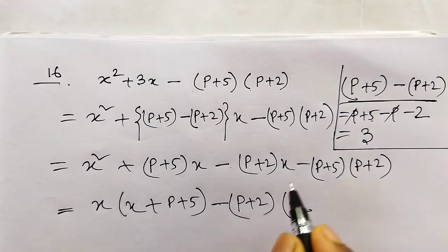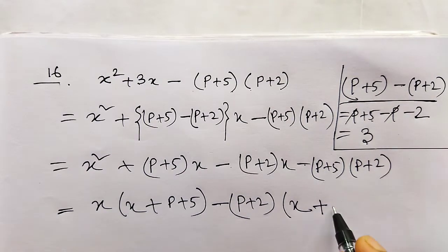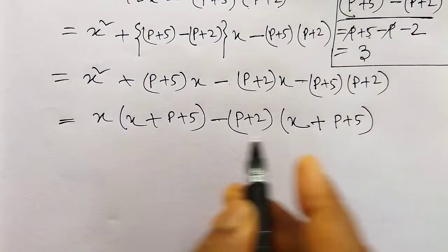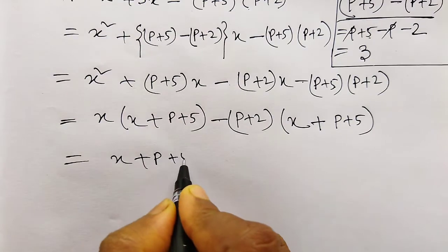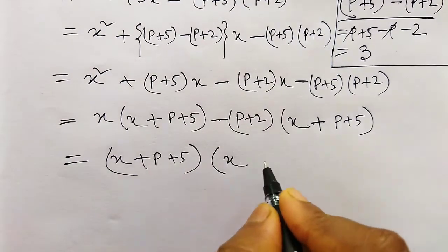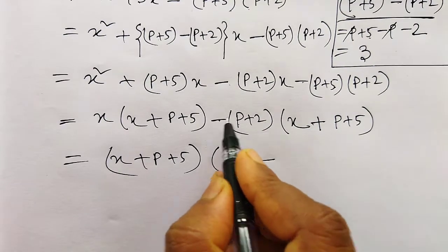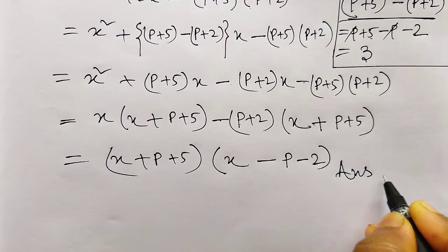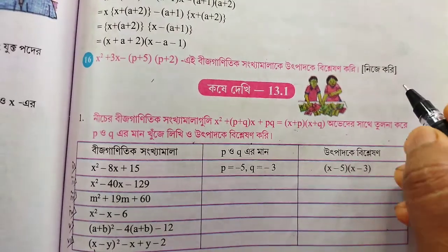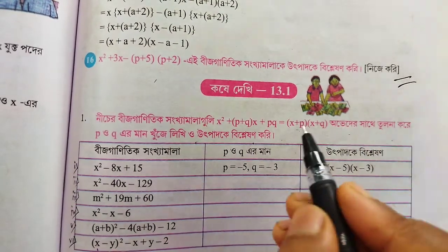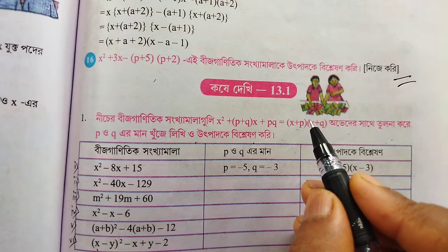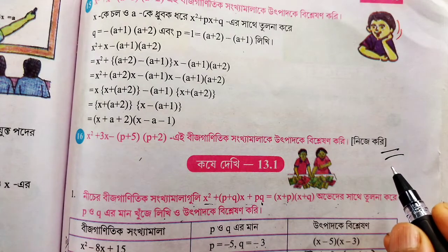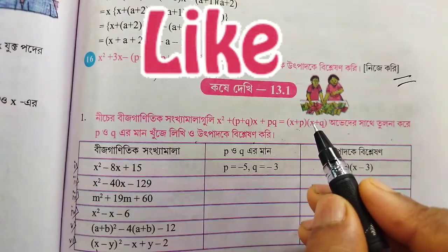x minus common - taking x minus common, the expression x minus, this p plus 2, since it's minus, the plus becomes minus. So we get p minus 2. This is the factorized form. After completing all the problems, check and verify your answers. Do the remaining questions yourself and submit.